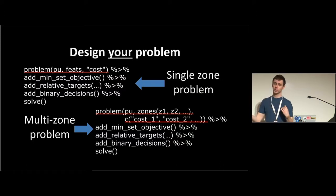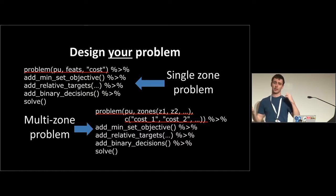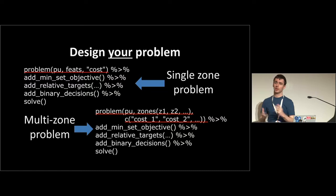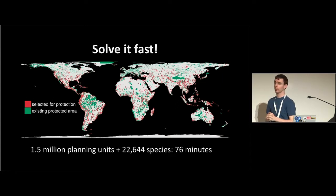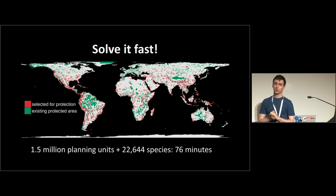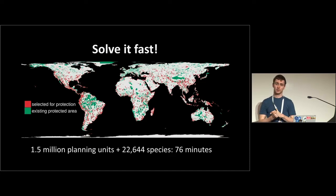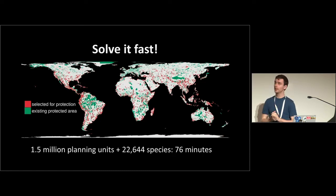We can also move from a single-zone problem to a multi-zone problem. Before it was conserve-or-not, but you might have different management actions or zones — a no-take, a partial take, or a full-take zone for controlling fishermen, or different conservation actions like trapping at different intensities. And you can solve it fast. Here is a global prioritization involving 1.5 million 10-by-10 kilometer pixels, 22,000 species, and a global dataset of protected areas. We're able to come up with a solution that would adequately conserve all 22,000 species in 76 minutes. You can solve really big problems really quickly.